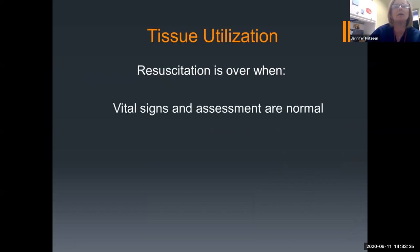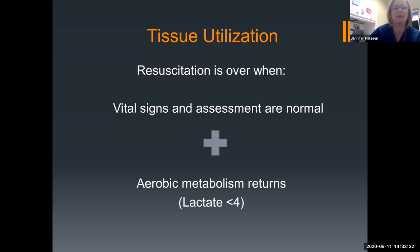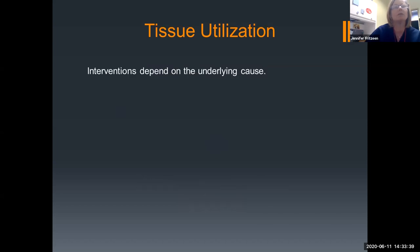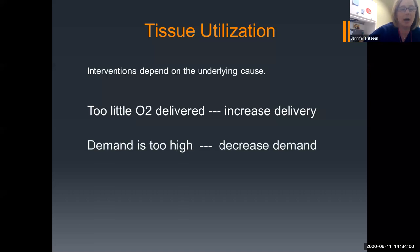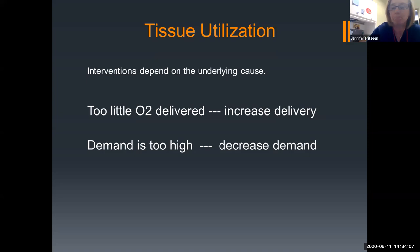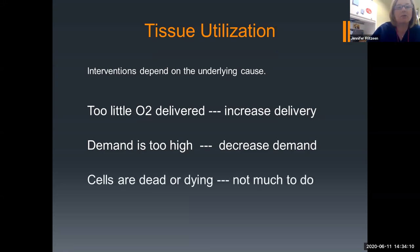Resuscitation is over when vital signs and assessment are normal, as well as your aerobic metabolism returns — you have a lactate that's less than 4 and a pH greater than 7.30. Interventions for tissue utilization depend on the underlying cause. If there's too little oxygen delivered, we need to increase delivery — give oxygen, improve ventilation, maybe give blood to increase hemoglobin, or fluid to increase cardiac output. If demand is too high, decrease the demand — bring down a fever, give pain medication. And if the cells are dead or dying, there's really not much we're going to be able to do, so it's important to catch it before it's too late.